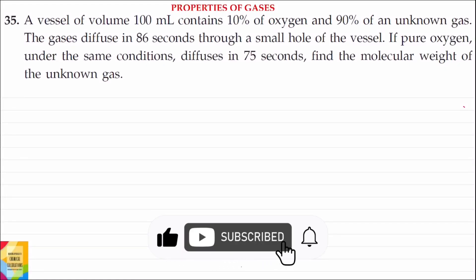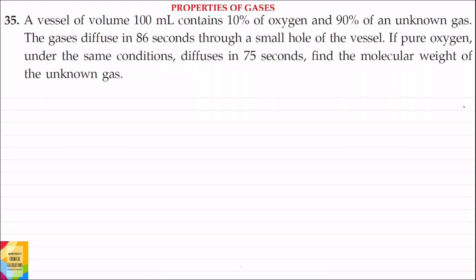Question 35. A vessel of volume 100 ml contains 10% of oxygen and 90% of an unknown gas. The gases diffuse in 86 seconds through a small hole of the vessel. If pure oxygen under the same conditions diffuses in 75 seconds, find the molecular weight of the unknown gas.